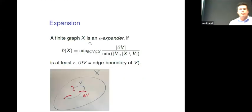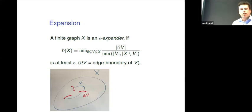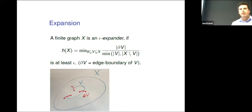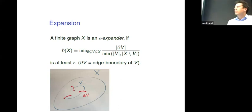A finite graph X is a golden epsilon expander if this parameter H of X is at least epsilon. What is H of X? You look at a graph X and you take any subset V, then you look at the ratio of how many edges connect something inside V with something outside V, divided by the size of V essentially. The bigger this parameter is, in some sense the graph has better connectivity properties.